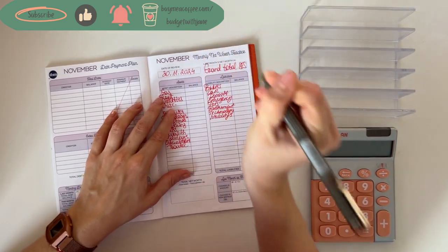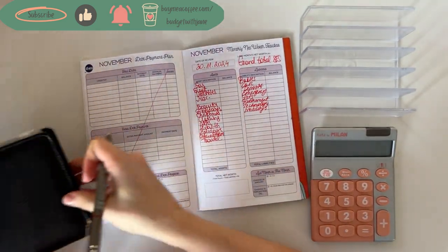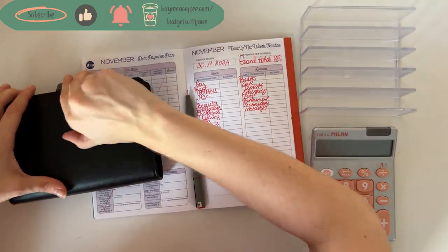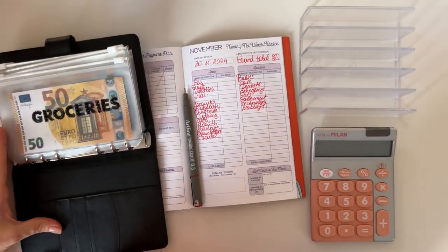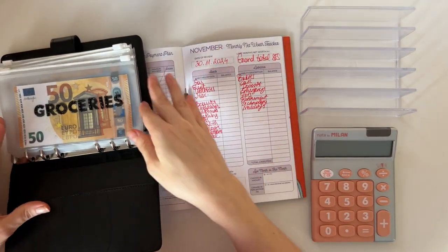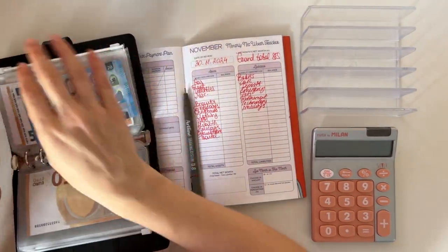Let me grab a pen. I'm going to set up the envelopes so we can start counting. Today's the 30th of November when I'm filming this. We are going to start counting. What I do is I count the grand total of all of my binders, all my envelopes for each month, and then I track it.